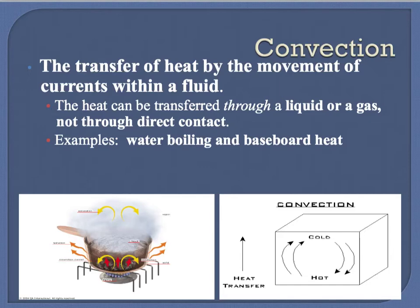Another type of heat transfer is called convection. This kind of reminds me of vents — just the V part — and vents blow out warm or cool air. Convection deals with the movement of currents within a fluid, and a fluid can be considered either a liquid or a gas — basically anything that flows. Heat is transferred in convection through liquid or gas, but not through direct contact. Examples include water boiling and baseboard heat used in houses. A key thing to remember: if there's any type of circulation or a current, that connects back to convection.